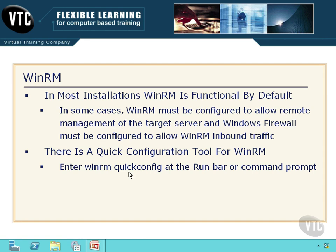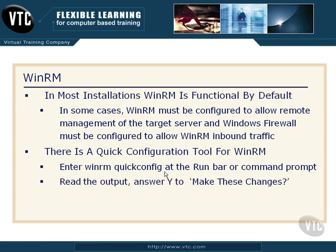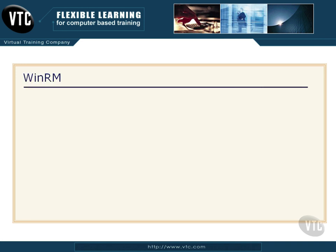I want to get a run bar or a command prompt up, and type winrm quickconfig. Then I'll execute that command, and whatever it comes back and tells me, I am just going to say yes. You can read that — it talks about target servers and all sorts of things. The bottom line is answer yes when it gives you a question. Make these changes, and that will configure WinRM.